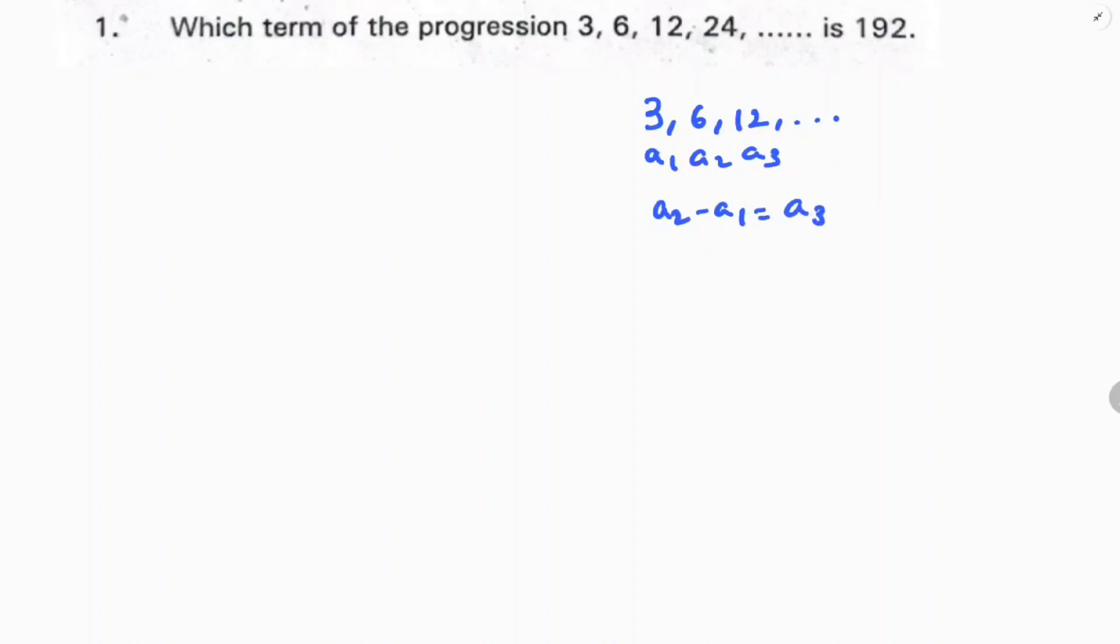a2 minus a1 should equal a3 minus a2 to be in arithmetic progression. 6 minus 3 is 3, 12 minus 6 is 6. Clearly a2 minus a1 is not equal to a3 minus a2, so it is not in AP.